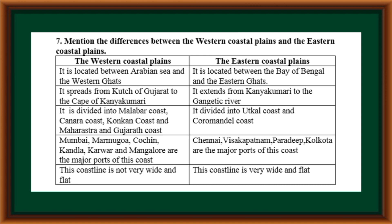Mention the differences between Western Coastal Plains and Eastern Coastal Plains. The Western Coastal Plains: it is located between the Arabian Sea and the Western Ghats. It spreads from Kutch of Gujarat to the Cape of Kanyakumari. It is divided into Malabar Coast, Kanara Coast, Konkan Coast, and Maharashtra Gujarat Coast. The Eastern Coastal Plains: it is located between the Bay of Bengal and the Eastern Ghats, extending from Kanyakumari to the Gangetic River. It is divided into Utkal Coast and Coromandel Coast.